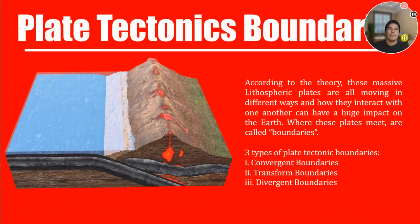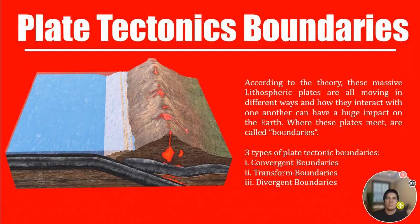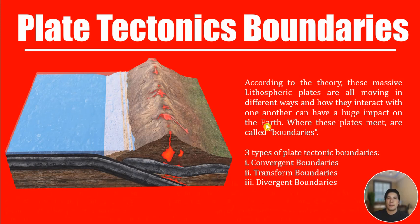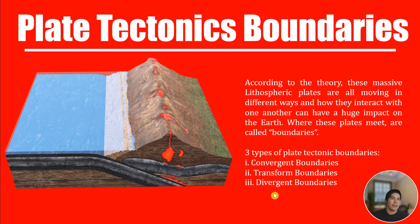We have these plate tectonic boundaries. According to the theory, these massive lithosphere plates are all moving in different directions, and how they interact with one another can have a huge impact on the earth. Where these plates meet, they are called boundaries. There are three types of plate tectonic boundaries: convergent boundaries, transform boundaries, and divergent boundaries.